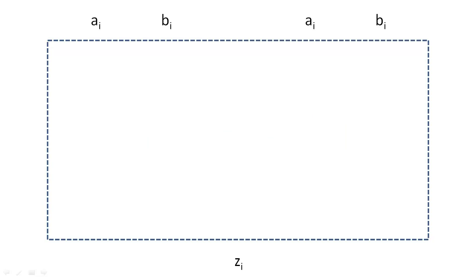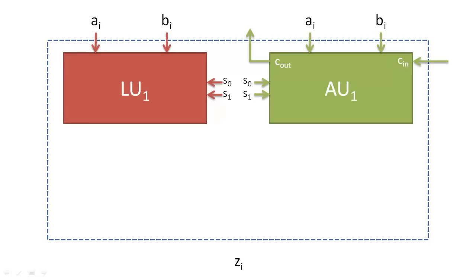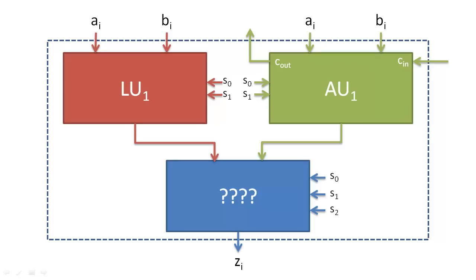We can create this 1-bit ALU by designing a logic unit that executes the logic operations, and an arithmetic unit that executes the arithmetic operations. The details of the arithmetic unit are covered in a different lecture. We will then need to create a circuit that would select which operation's result to send back to the register. This circuit is called the multiplexer.